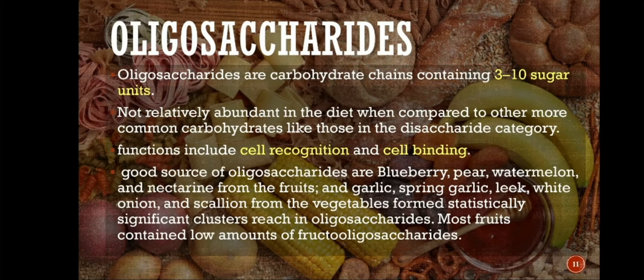Oligosaccharides are carbohydrate chains containing 3 to 10 sugar units, not relatively abundant in the diet when compared to other more common carbohydrates like those in the disaccharide category. Their functions include cell recognition and cell binding. Good sources of oligosaccharides are blueberry, pear, watermelon, and nectarine from the fruits, and garlic, spring garlic, leek, white onion, and scallion from the vegetables, which form statistically significant clusters rich in oligosaccharides.